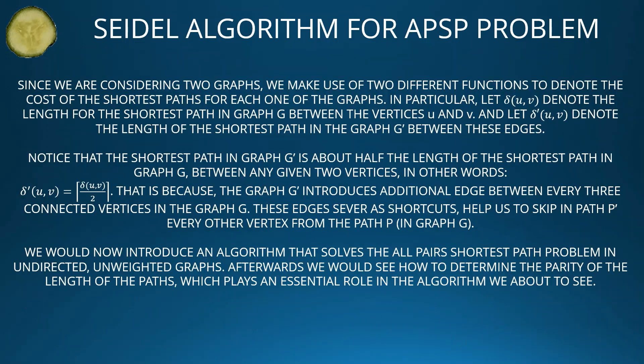Since we are considering two graphs, we use two different functions to denote the shortest path cost. Let δ(U, V) denote the length of the shortest path in graph G between vertices U and V, and let δ'(U, V) denote the length of the shortest path in graph G'. Notice that the shortest path in G' is about half the length of the shortest path in G — that is, δ'(U, V) = ⌈δ(U, V) / 2⌉. This is because G' introduces shortcuts that let us skip every other vertex.